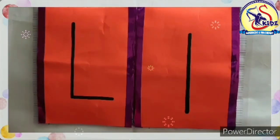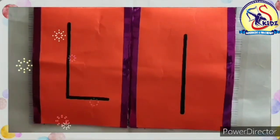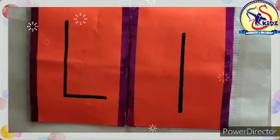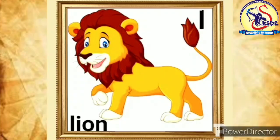Now I am going to show you some pictures of letter L. Now see the first picture. It is of lion. Now speak with me: L, lion. L, lion. This is a lion.